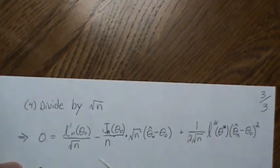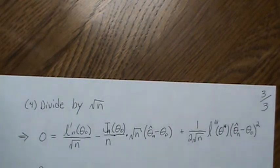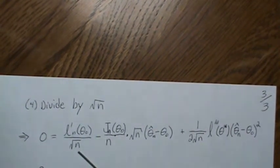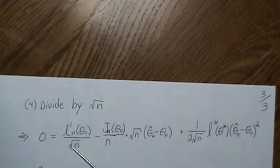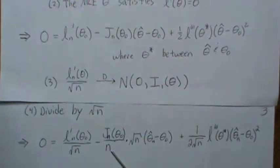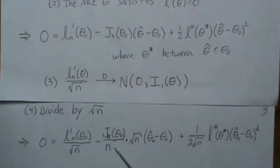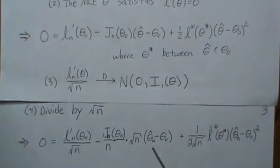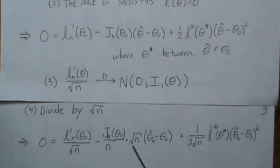We want this Taylor expansion to behave properly, so we divide everything by the square root of n. We know the score term divided by sqrt(n) converges to a normal distribution, and the observed Fisher information term divided by n converges in probability to the theoretical Fisher information. We want to isolate something that looks like sqrt(n) times (θ-hat − θ₀) to prove the distribution of the MLE.